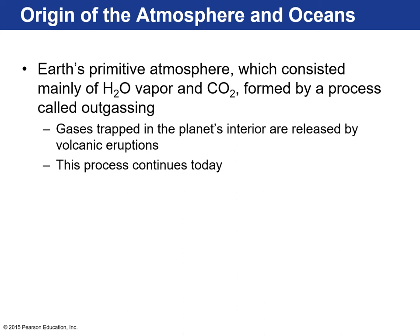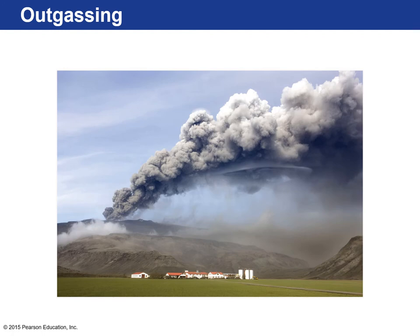Let's talk about the origin of our atmosphere and oceans. Earth's first atmosphere was very primitive — mostly water vapor, carbon dioxide, and nitrogen. Those gases were trapped by the gravitational pull of the Earth and delivered to the outer layers by volcanic eruptions. When volcanoes erupt, they emit a lot of gas — that process continues today. This is an Icelandic volcano spewing out or outgassing, and that's where the majority of the gases from our atmosphere come from.